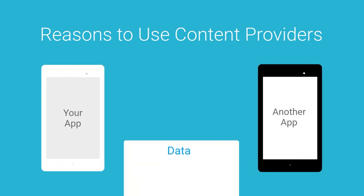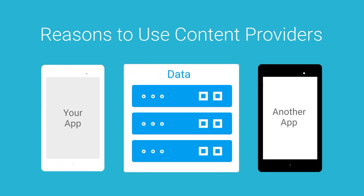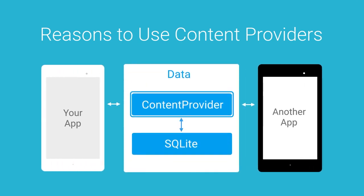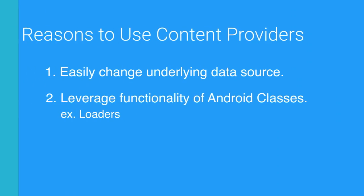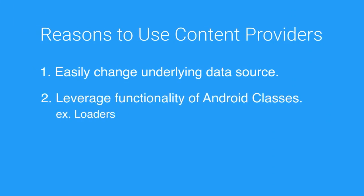Reason number one: as an extra level of abstraction, they allow developers to change the underlying data source without needing to change any code in the applications that access the content provider. The second reason is that some important Android classes, such as loaders and cursor adapters, use content providers. So if you want to use a loader, you need to make your data accessible through a content provider.